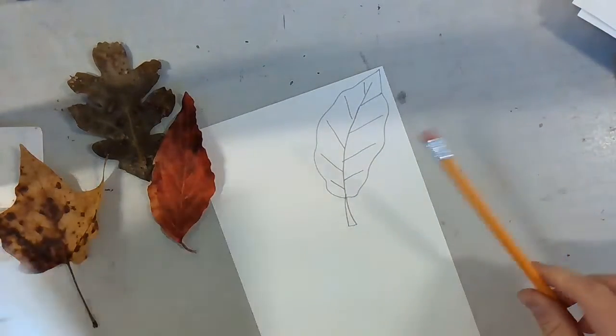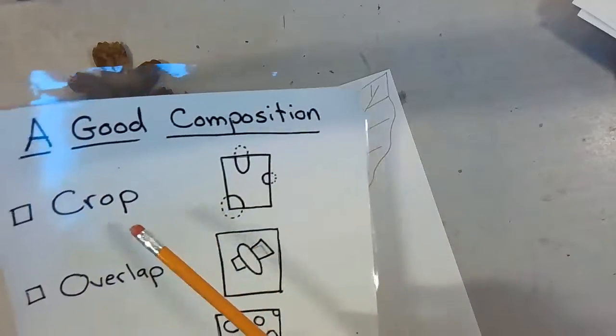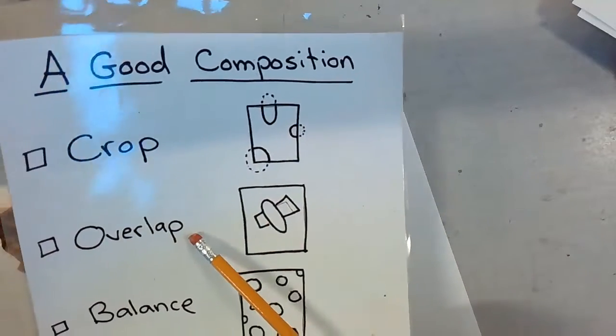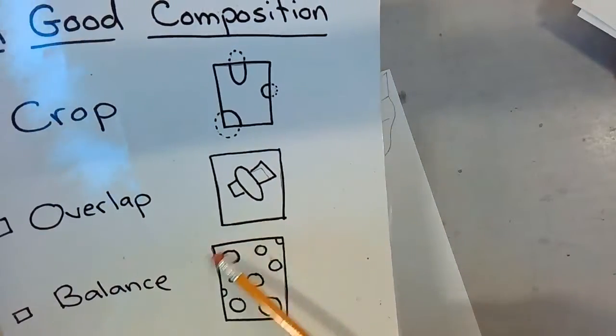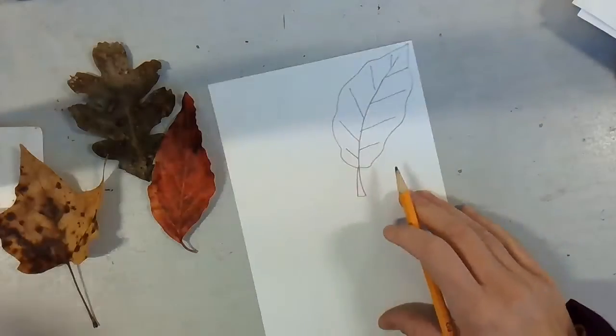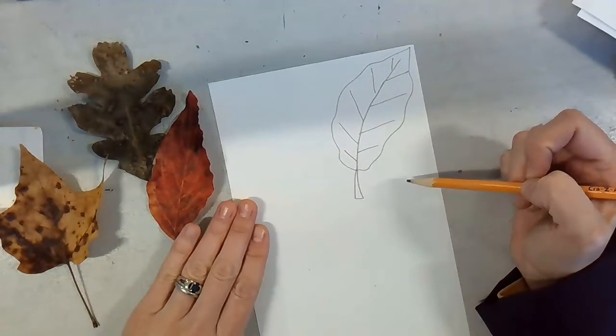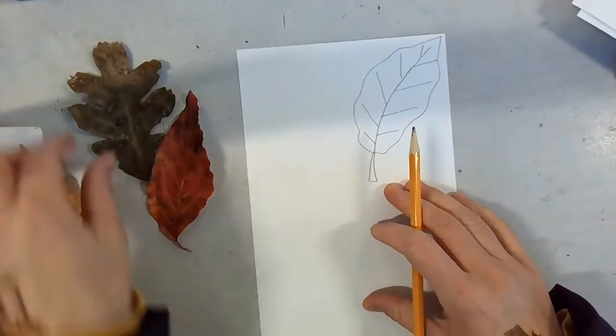Okay, now, beautiful little leaf. Now, did I crop this off? Did I have anything overlapping? And it's certainly not balanced because it's only one leaf. So I've got to work on my composition elements.